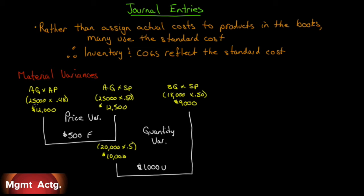Here's our actual cost of materials: we bought 25,000 units at $0.48 for an actual cost of $12,000. Using our standard cost of $0.50, for 25,000 units we should have paid $12,500. We paid $12,000, so we have a $500 favorable price variance. Of the 25,000 units we bought, 20,000 were put into production at $0.50, so $10,000 left raw materials. But our standard costs say we should have only used 18,000 units, costing $9,000 — giving us a $1,000 unfavorable quantity variance.